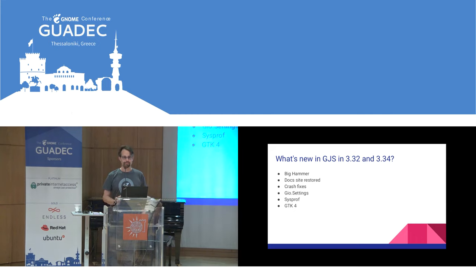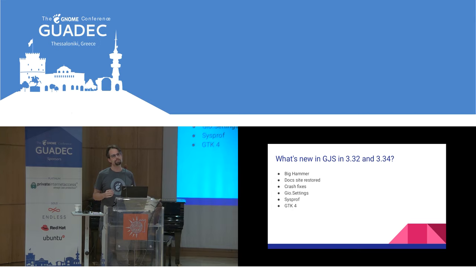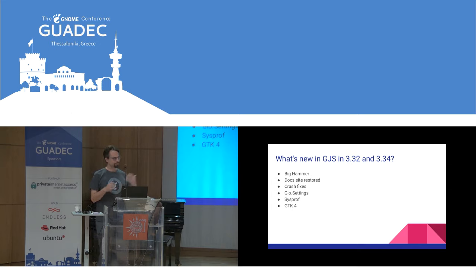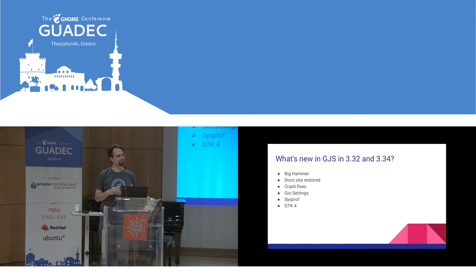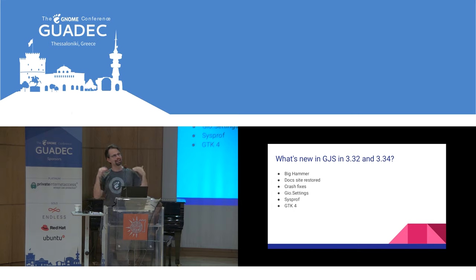I made a slide with some of the highlights. This year there have been a lot of less visible changes that are still important, but I'm not going to talk about them here — you can read the news file. These are the ones you're most likely to notice as a user, a developer of apps, a developer of GNOME Shell, or a developer of GNOME Shell extensions. At the top of the list is the big hammer — I'm going to skip that for now because we have an entire section on it later.